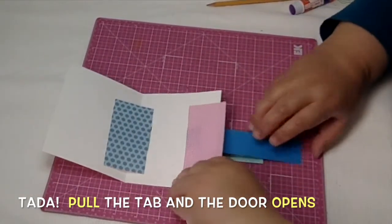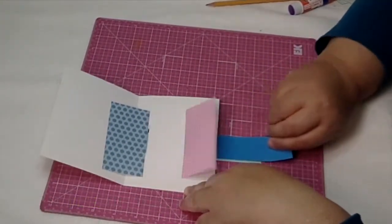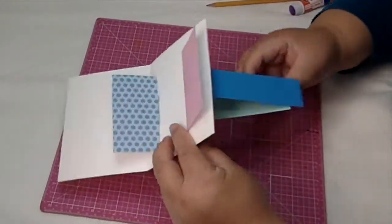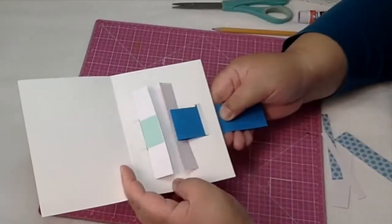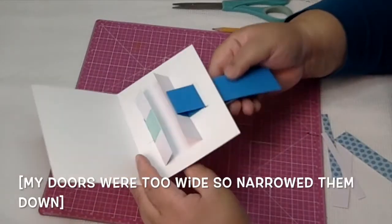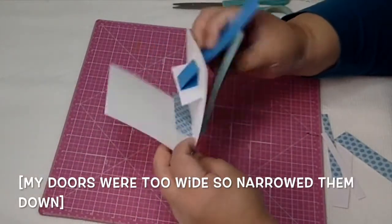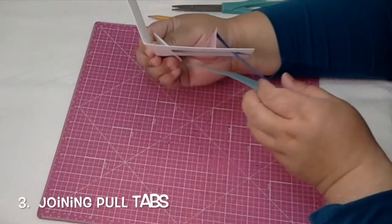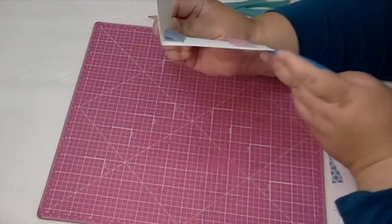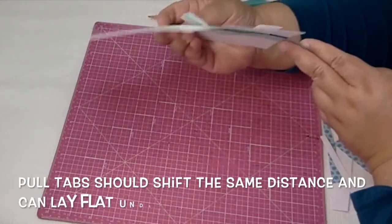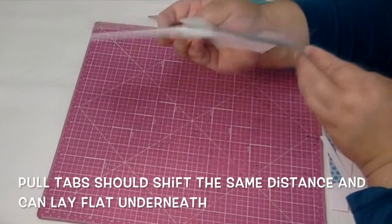I narrowed down my doors here because they were just too wide, and I just want to make sure that you can see that they're swinging in opposite directions. Okay, next is joining the tabs together to make one tab.